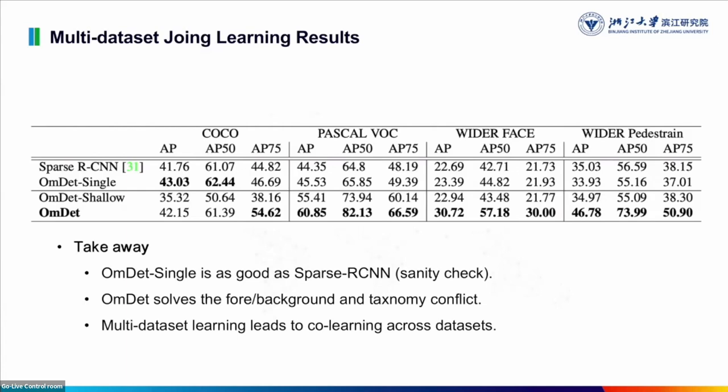There are several interesting takeaways from the results. First, OMDT-single performs as well as Sparse-RCNN, serving as a sanity check that OMDT degenerates to a normal Sparse-RCNN for a single task. Second, OMDT solves the foreground-background and taxonomy differences, as seen by comparing OMDT versus OMDT-shallow and Sparse-RCNN — OMDT-shallow leads to performance drops on COCO and some other tasks when training jointly across datasets.